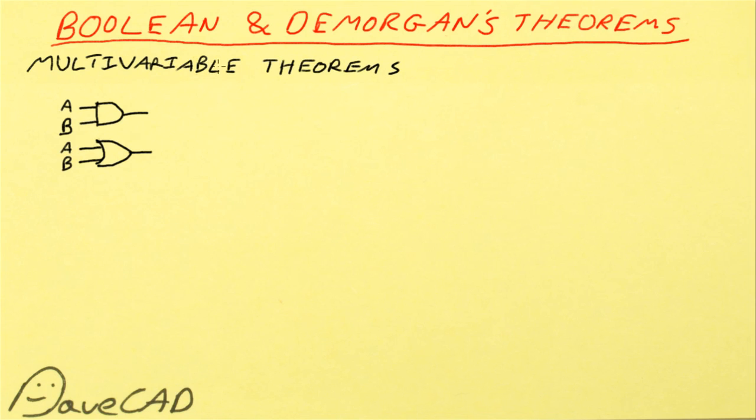Now we move on to multivariable theorems. Now, a theorem is not an equation, so we're not going to put, say, output Z here or anything like that because we're not dealing with equations. Theorems are just propositions based on, in this case, logical conclusions based on these gates. So let me try and explain this a bit better.